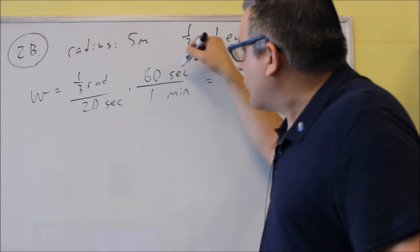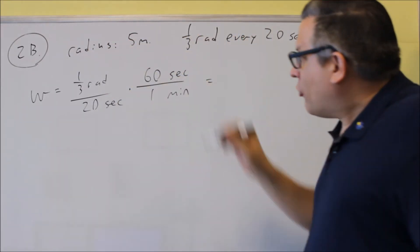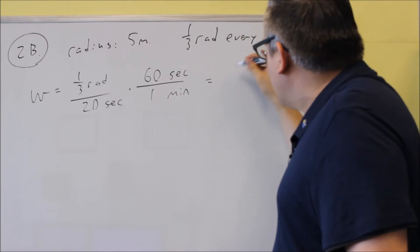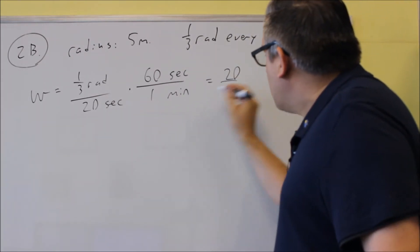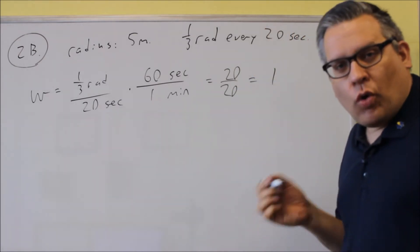We can multiply this across the top. If we multiply across the top, we're going to get 20. Across the bottom is going to be 20. And so that's going to give us 1.